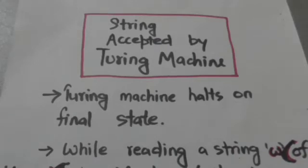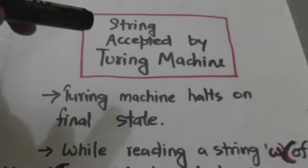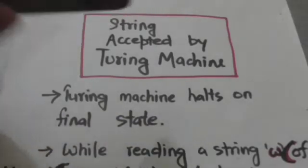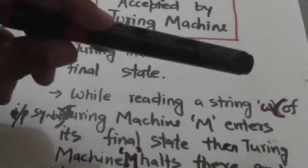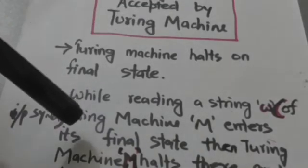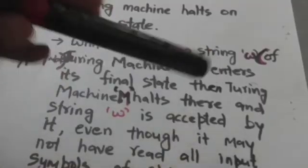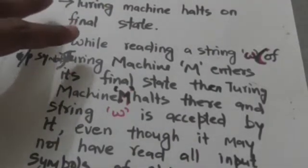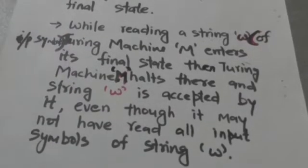Hello friends, welcome back to the tutorials. In this tutorial we will study about strings accepted by a Turing machine. Without loss of generality, we will first assume that the Turing machine halts on its final state. If, while reading a string W of input symbols, Turing machine M enters its final state, then Turing machine M halts there and the string W is accepted by it, even though it may not have read all input symbols of string W.